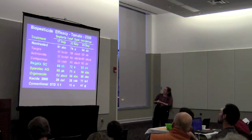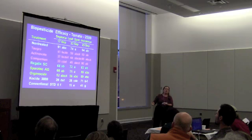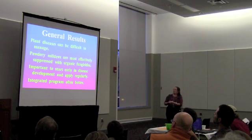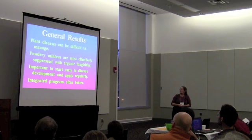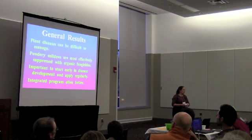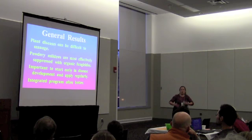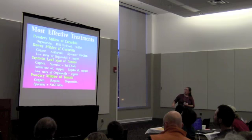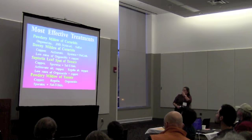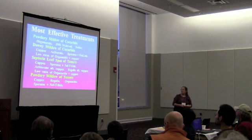Comparing 2008 data to 2009 — which was a really wet year — numbers are much higher and there's a lot less control. But some products still show activity. To summarize: plant diseases can be difficult to manage. Powdery mildews are most effectively suppressed with organic fungicides in both cucurbits and tomatoes. Starting early in disease development is critical — if you're using biopesticides, be right on it at first symptoms and apply regularly. Integrated programs are often better. These best-performing products from my trials are shown here, though there may be other labeled options I haven't evaluated that could perform even better.